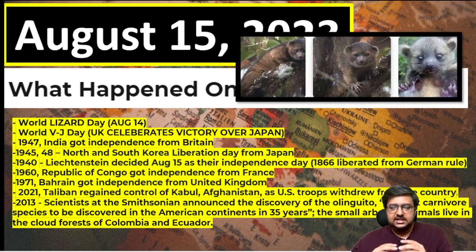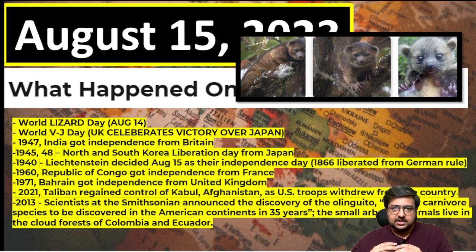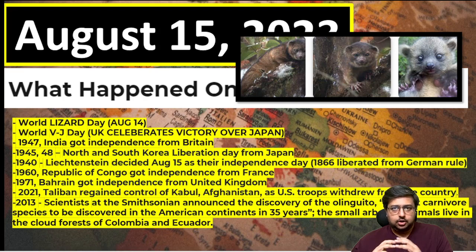In 2013, a scientific discovery was made - the first carnivore species discovered in 35 years in the American continent. Even though many animals are discovered, a carnivore species had not been found there for 35 years. This was a small arboreal animal, meaning a tree-living animal, living in the forests of Colombia and Ecuador.